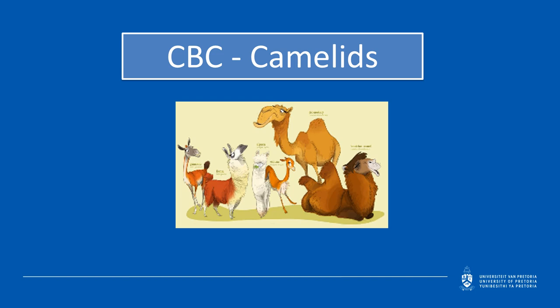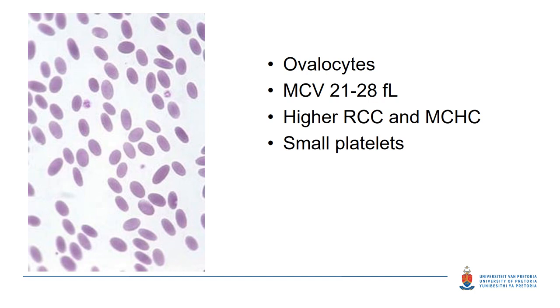We're going to start looking at interesting characteristics in the hematology of different animal groups, beginning with the camelids. There are six species: two old-world camelids — the dromedary and the Bactrian camel — and four new-world camelids: the guanaco and vicuña, which are wild, and the alpaca and llama, which are domesticated. Camelid erythrocytes are oval in shape and quite small, with a mean cell volume around 25 femtoliters. Because they have small cells, they also have a higher red cell count and mean cell hemoglobin concentration, and the platelets are also very small.